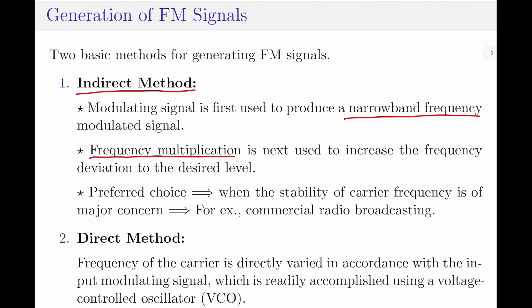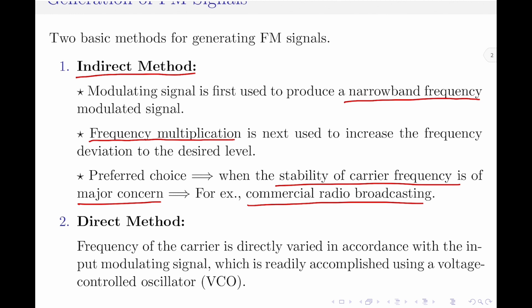The indirect method of FM signal generation is the preferred choice when the stability of the carrier frequency is of major concern — for example, commercial radio broadcasting. The second method is called the direct method, in which the frequency of the carrier is directly varied in accordance with the input modulating signal, which is readily accomplished using a voltage controlled oscillator.